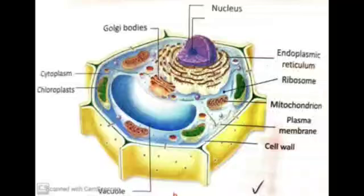Plastids are basically of three types. Number one: chloroplasts. They contain the green colored pigment chlorophyll, which is needed by the plants to make their food during photosynthesis.